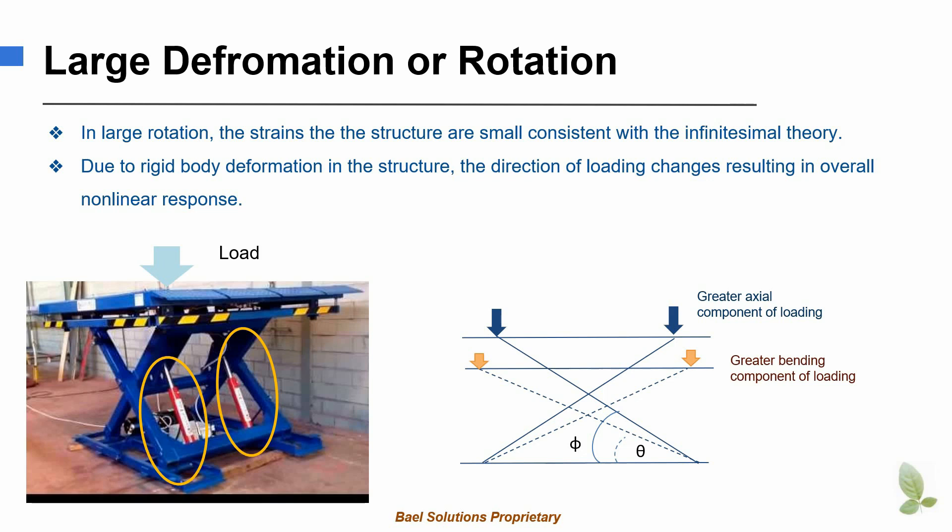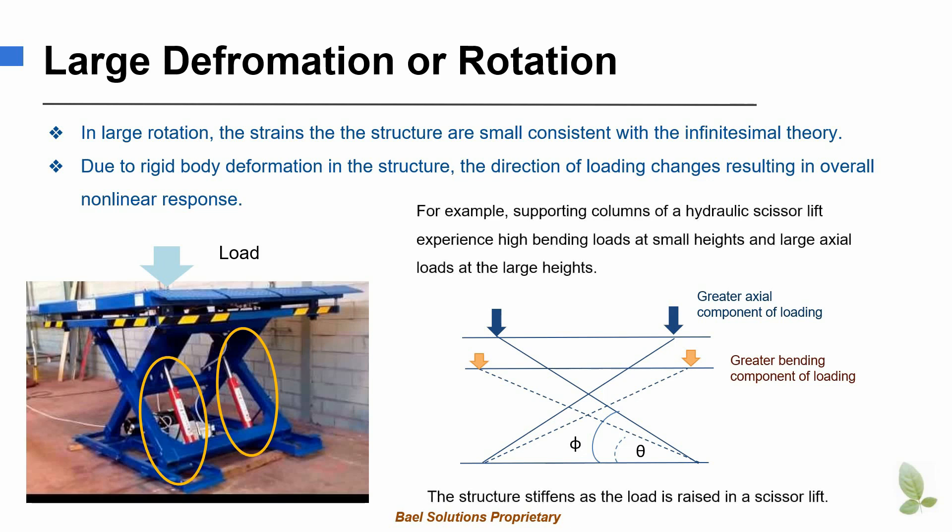Generally axial stiffness of the columns is higher than the bending stiffness. Therefore, the structure stiffens as the load is raised. At all the inclination angles, the strains can still be very small.